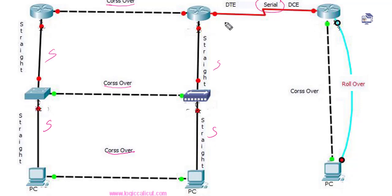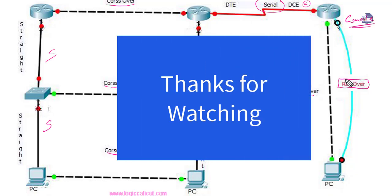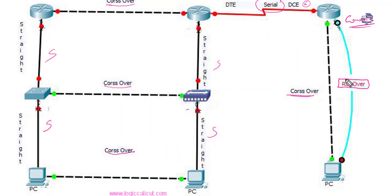For serial connections between routers, we use DCE and DTE with a clock rate — that is why we use Cisco serial cables. The console cable connects a router or switch directly to a PC via the console port. The console cable is already rolled over and is a different type of connection. Thank you.